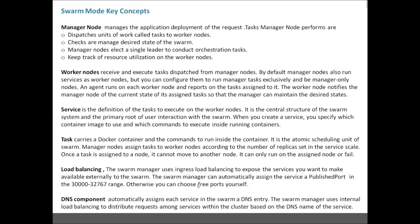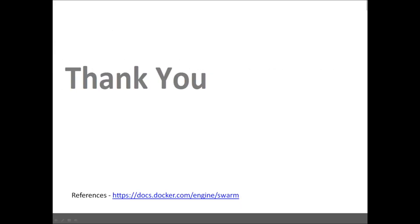The swarm manager uses ingress load balancing to expose services externally. The swarm manager can automatically assign a service a published port in the range of 30000 to 32767, or you can choose a free port in your network. The DNS component automatically assigns each service in the swarm a DNS entry, and the swarm manager uses internal load balancing to distribute requests among services within the cluster based on the DNS name of the service.